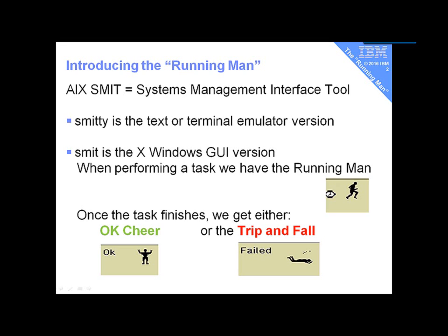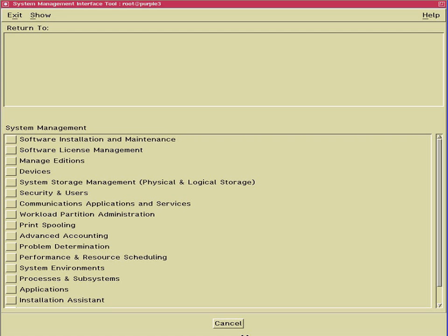When he finishes the task, we get one of two results. Either he celebrates with his hands in the air, meaning it's done, or he trips and falls if it's failed.